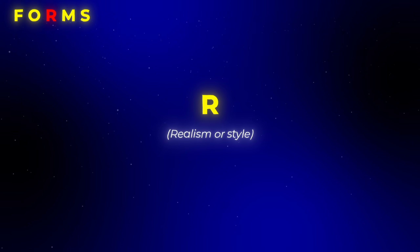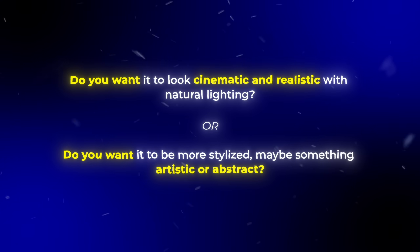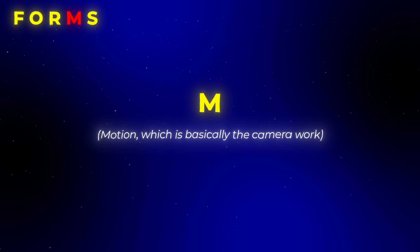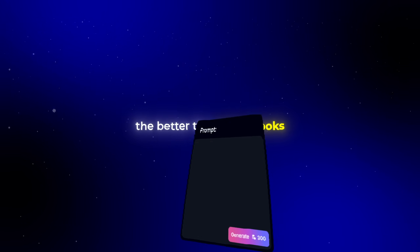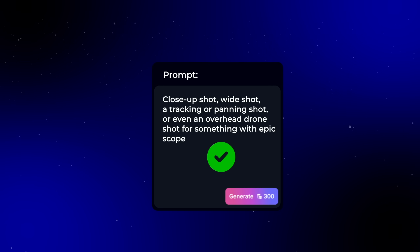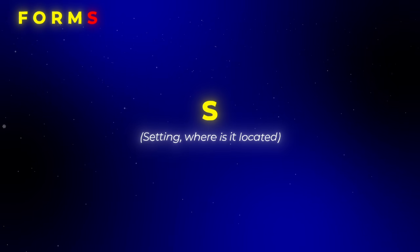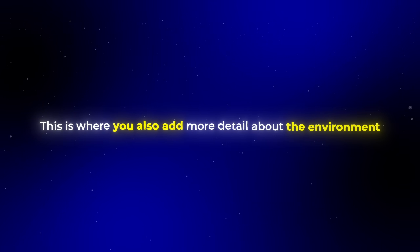The R stands for Realism or Style — this is where you explain what kind of look and feel you want the video to have. Do you want it cinematic and realistic with natural lighting, or more stylized, artistic, or abstract? The clearer you are about the style, the closer you'll get to your vision. The M stands for Motion, which is basically the camera work. Kling responds really well to film language, so adding camera details like close-up shot, wide shot, tracking or panning shot, or even an overhead drone shot makes the output look better. Finally, the S stands for Setting — this is where everything takes place, like Tokyo, a beach, or inside a small room. Adding environment detail helps the AI keep things consistent.